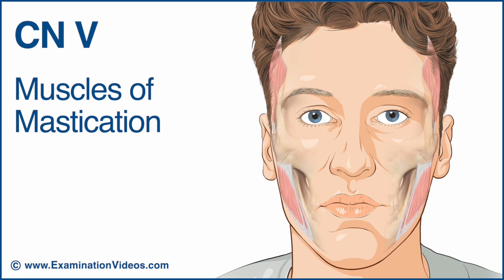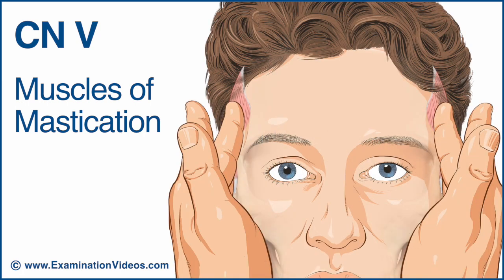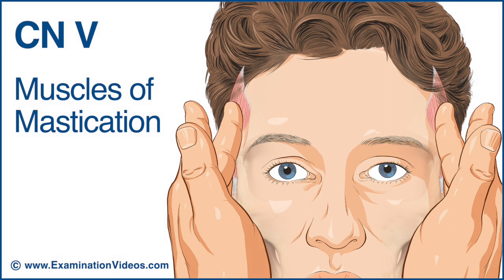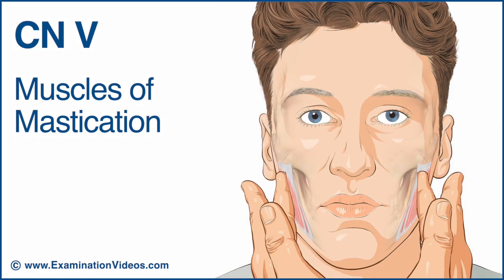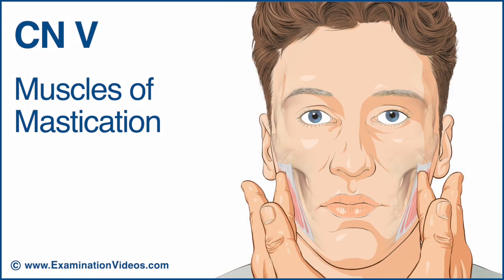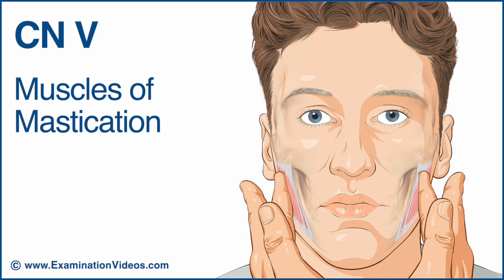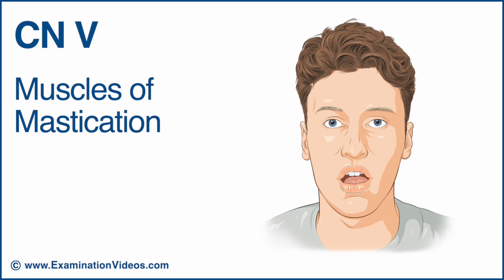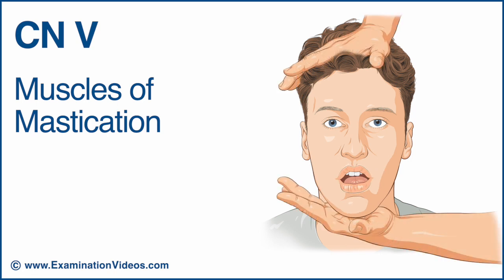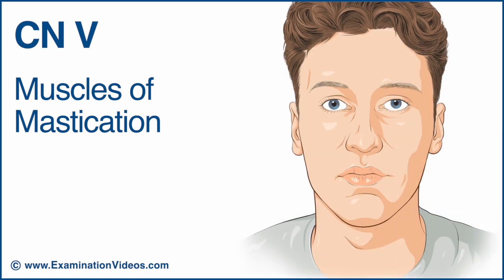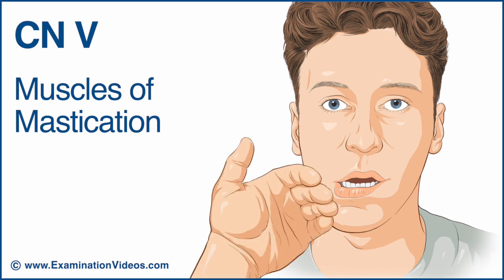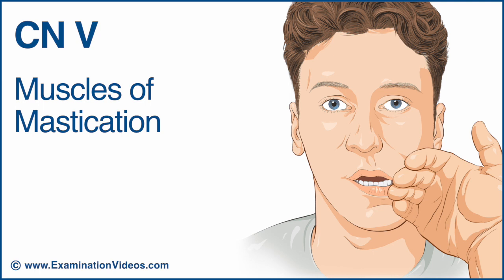To examine the muscles of mastication, first palpate the temporalis muscles and ask the patient to clench their teeth. Feel the muscle tension and compare each side. Next, palpate the masseter muscles and ask the patient to clench their teeth again. Feel the muscle tension and compare each side. Now ask the patient to open their jaw and keep it open while you attempt to close it. Assess the strength of their resistance. Ask them to move the jaw to the right side and hold it there while you press against the jaw. Repeat on the opposite side and compare the strength of resistance.